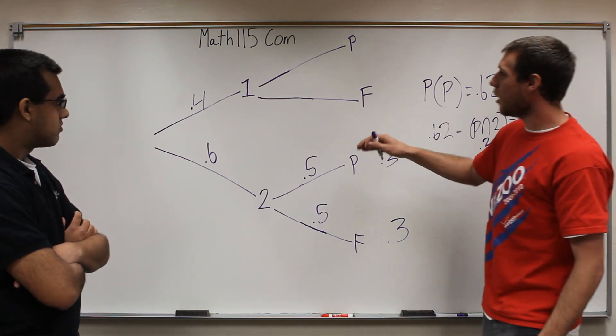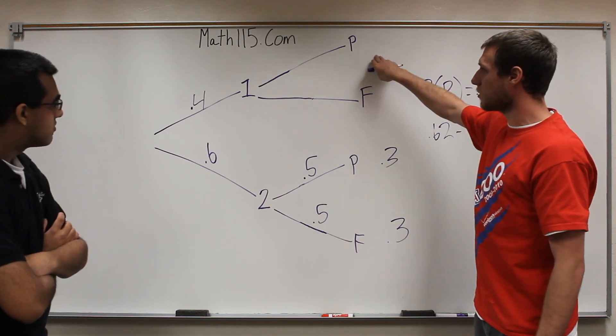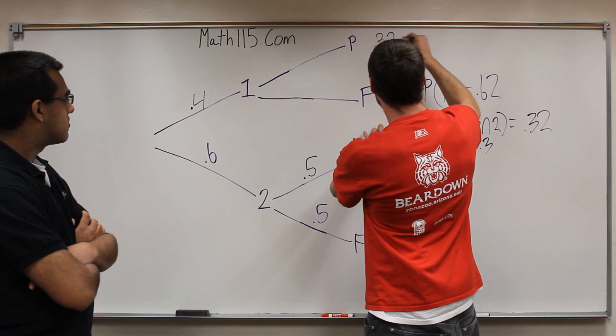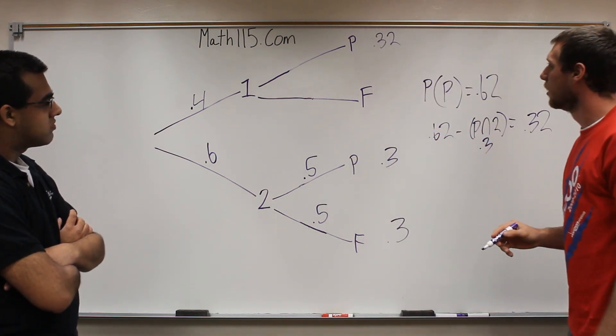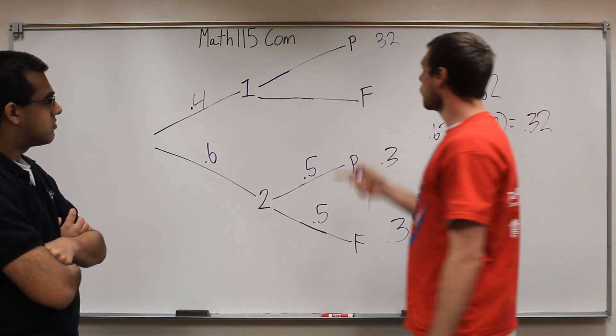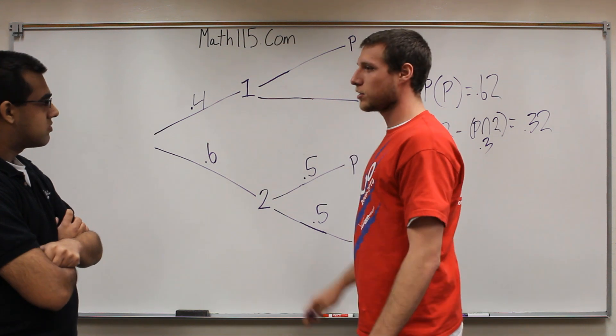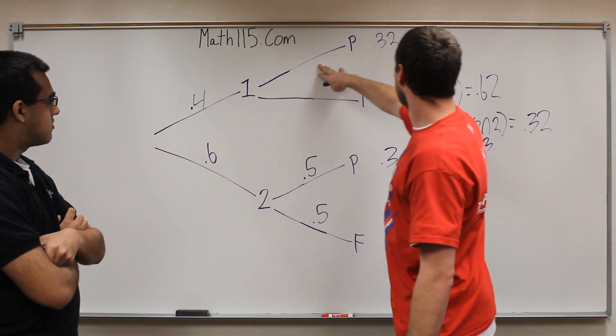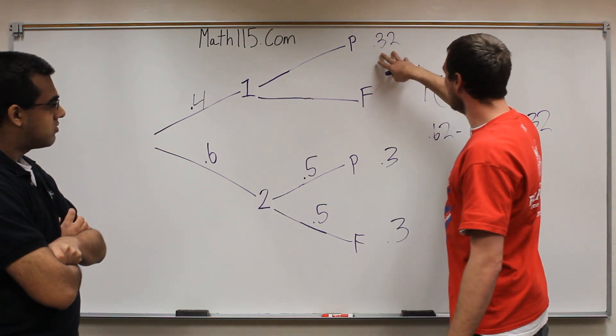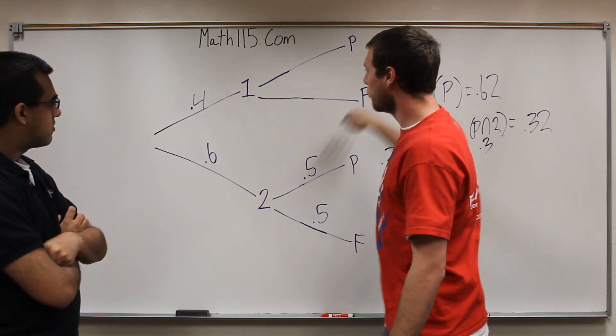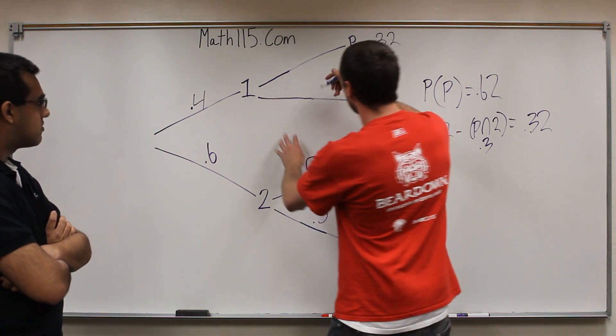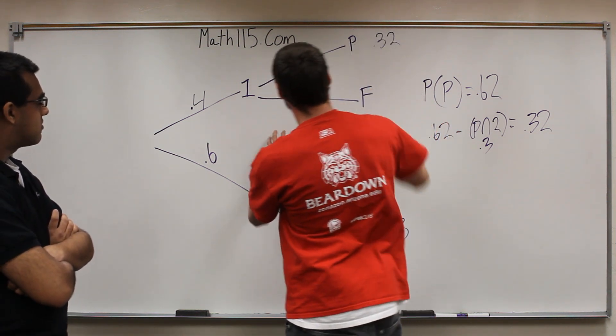We already know that out of section 2, 30% will pass. So we can say that this probability, the 0.62 of passing, subtracted from the probability of passing intersection from section 2 which is 0.3, is going to be equal to 32%. So the only other part where we have people passing would be right here, so this is going to have to be 32% here.